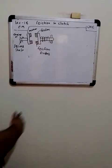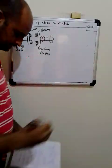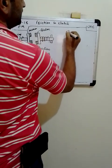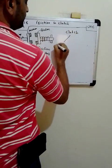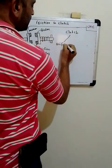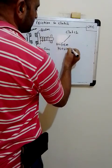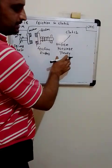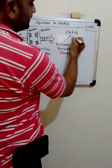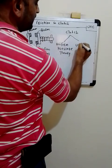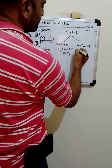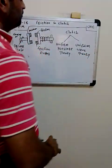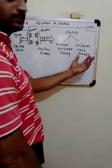Now we will derive expressions for this. There are two theories when designing a clutch. First is uniform pressure theory — when the vehicle is new, at that time we apply this theory because there is no wear. Second, once the vehicle becomes old, we apply the uniform wear theory. We will see derivations for both the uniform pressure theory and the uniform wear theory.